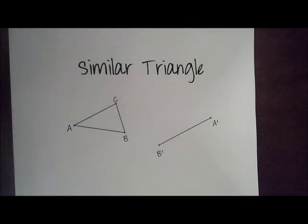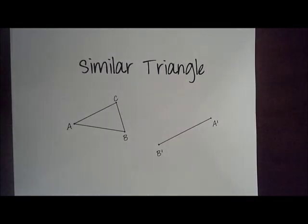Here we're constructing a triangle that's similar to a given triangle. Now you know that similar means same shape, different size. All the angles will be exactly the same, but the lengths of the segments will be different.